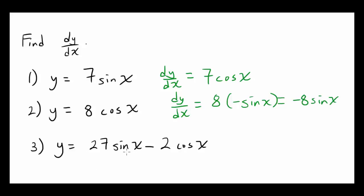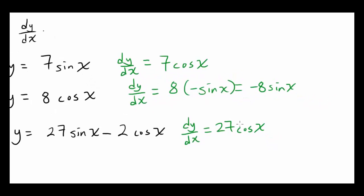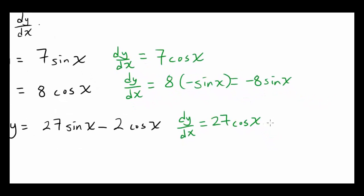The last one: y is 27 sine of x minus 2 times cosine of x. Well, dy/dx is going to be 27 times the derivative of sine, which is cosine, minus 2 times the derivative of cosine, which is negative sine of x. And since you have negative 2 times negative 1, you're going to have positive 2 times sine of x.